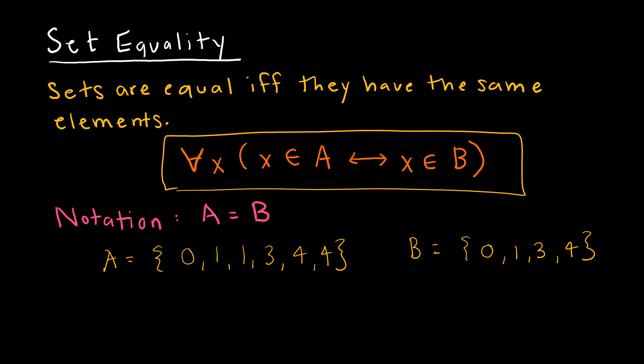These are equal sets. Set A is equal to set B because even though there are duplicates of 1 and 4, there are no elements in one set that are not in the other. Order doesn't matter and duplicates don't matter. However, if B included 5, then A is not equal to B because B has an element of 5 that is not contained in set A.